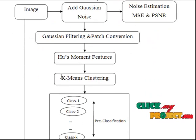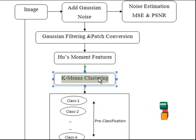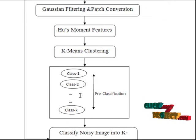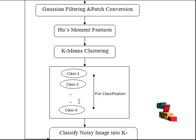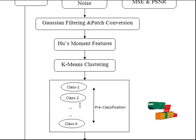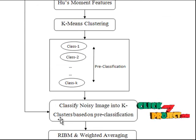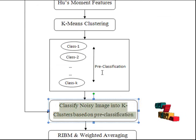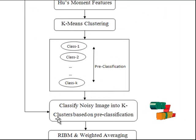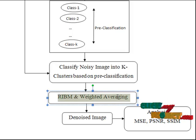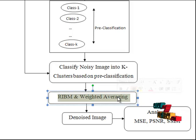you have to calculate hue moment features and store them in a mat file. Then provide that mat file to the k-means clustering algorithm. This k-means clustering algorithm will cluster the patches into classes — the patch features are clustered here. This is the pre-classification referred to in the paper. We then get the original noisy image into clusters using this pre-classification as a lookup table, and subject it to RIBM — rotation invariant block matching — and calculate the weighted average method, which is always used in NLM.